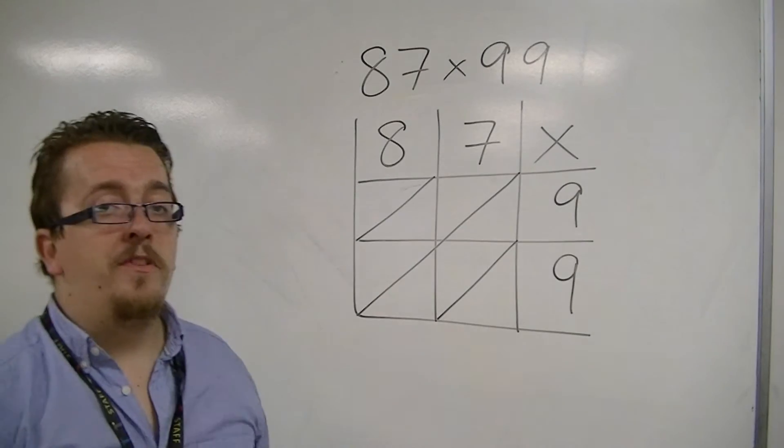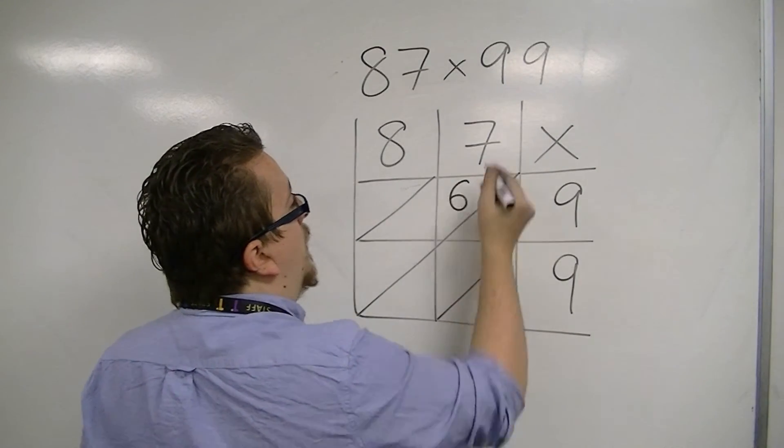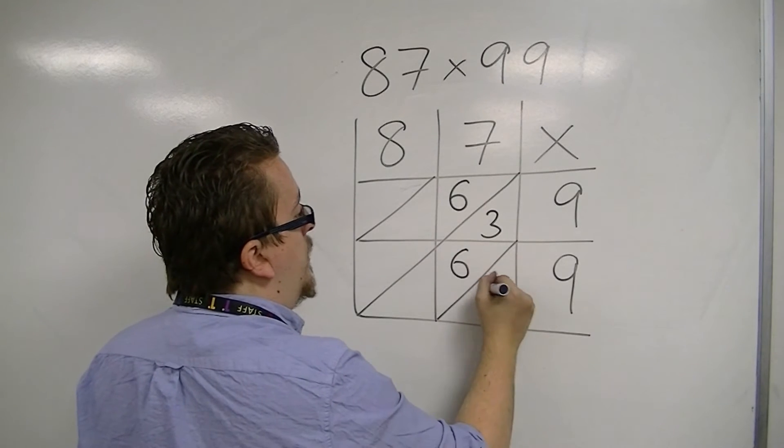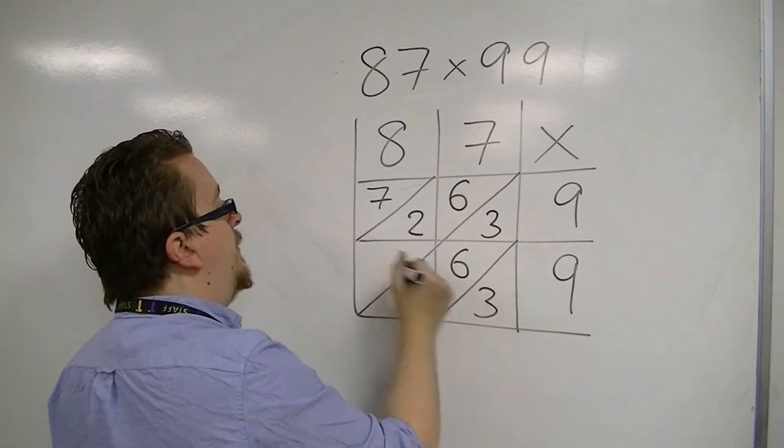So, we have 7 times 9 to start off with, which is 63. 7 times 9 is 63. 8, 9 is 72. 8, 9 is 72.